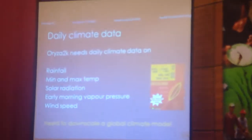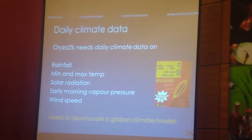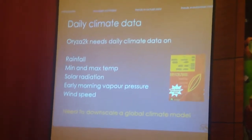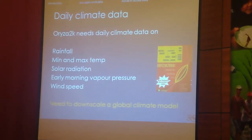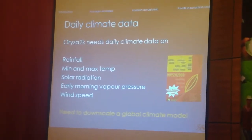The final step in this process was to look at potential yields. As David alluded to, it's part of the process of computing yield gap estimates at the same kind of detail. The way we've approached this is to use our ORYZA 2000 crop growth model and climate data in order to generate potential yield estimates for 2010 and 2035. ORYZA 2000 requires daily climate data on a range of variables: rainfall, temperature, radiation, vapour pressure, and wind speed. The only way for us to generate that is to downscale results from global climate modelling exercises.